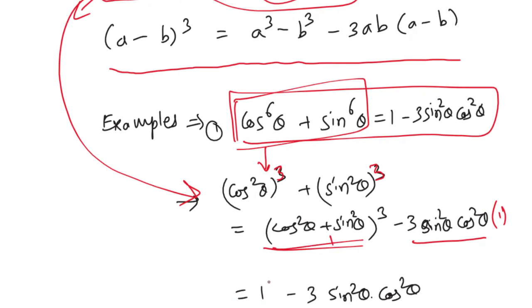So 1³, which is 1, minus 3sin²θcos²θ. If you apply this equation to the left hand side, we can easily prove that left hand side equals 1 - 3sin²θcos²θ.